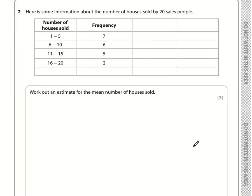Let's take a look at question number 2. Here is some information about the number of houses sold by 20 salespeople. The numbers in the frequency column add up to 20. 7 plus 6 is 13, plus 2 is 15, plus 5 is 20.